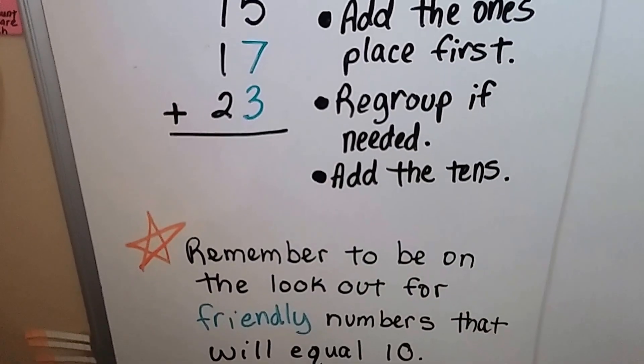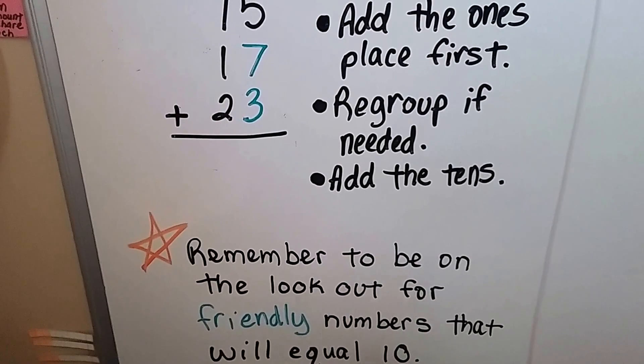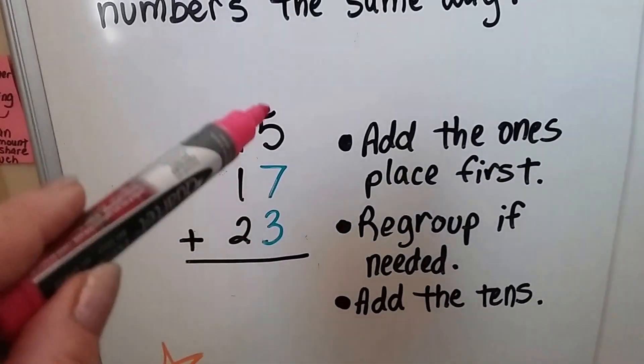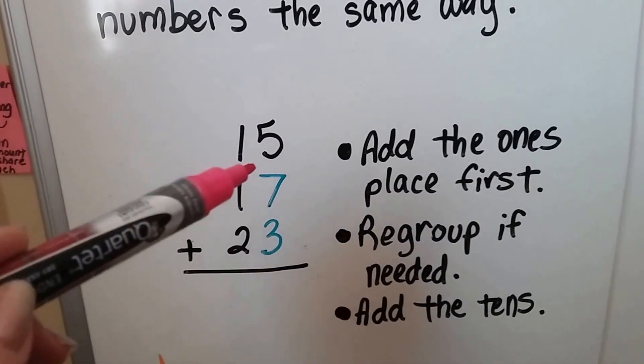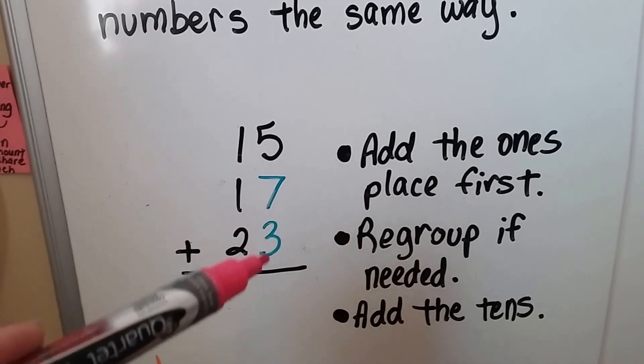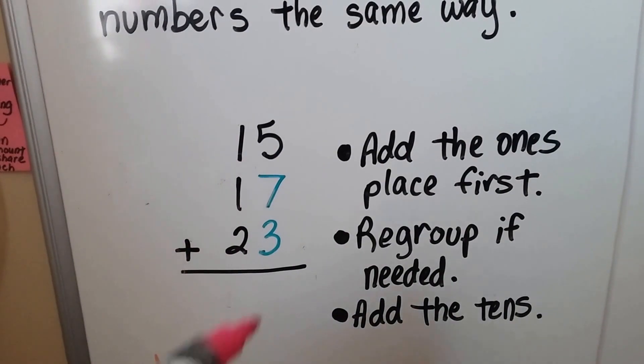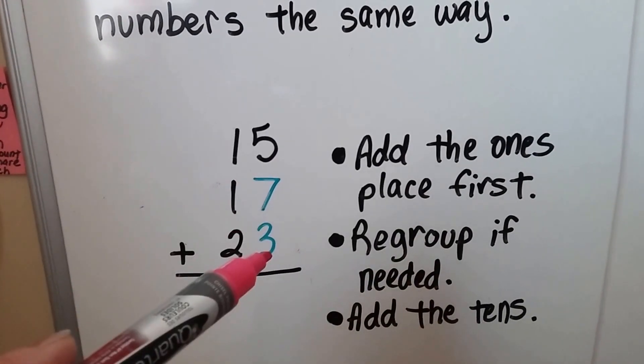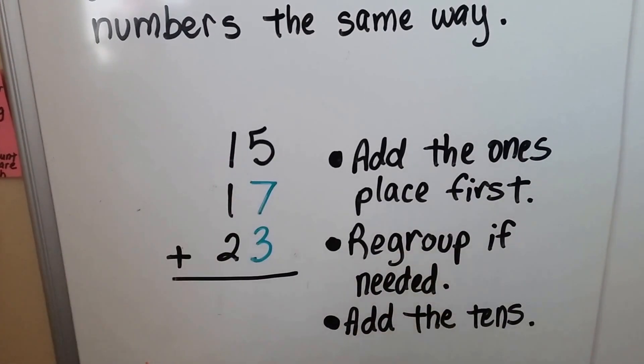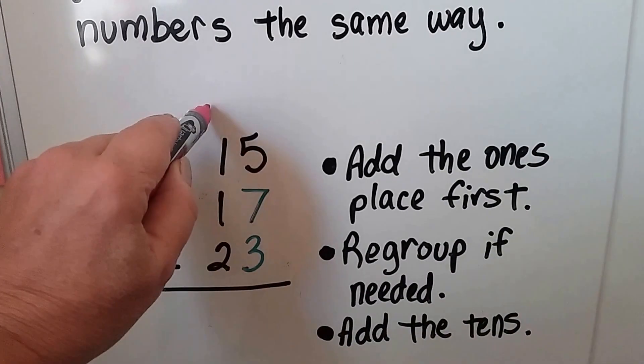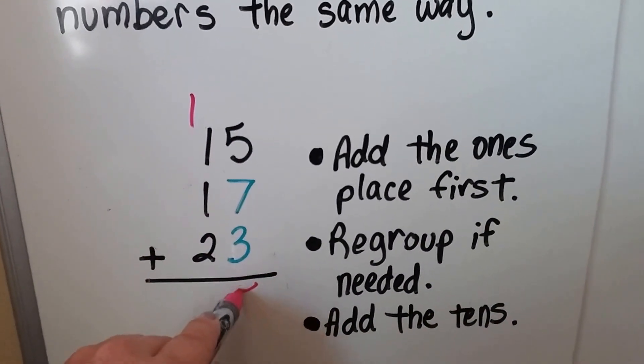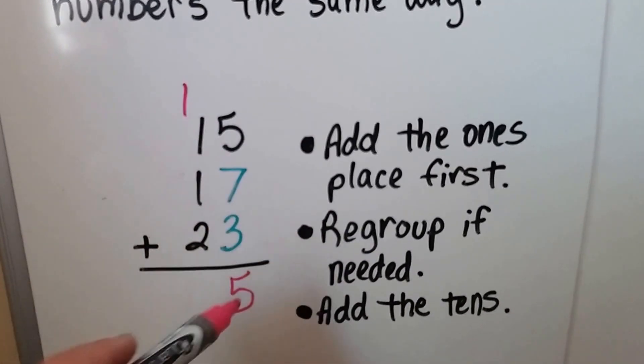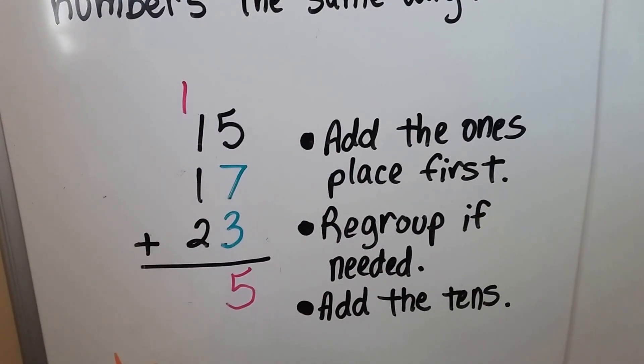We want to remember to be on the lookout for friendly numbers that will equal 10. So if you look at this column right here of the ones place, we can see that 7 plus 3 is equal to 10. So they're friendly. We can add that first: 7, 8, 9, 10. Now we can just add the 5 and get 15. It goes much quicker when we do the friendly numbers first.